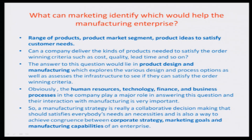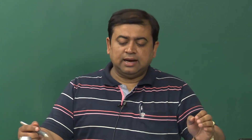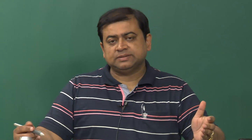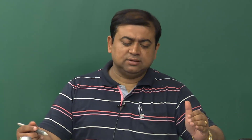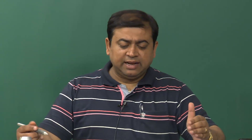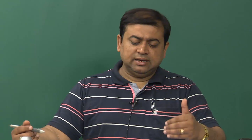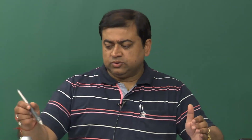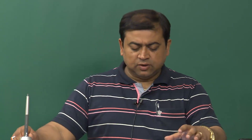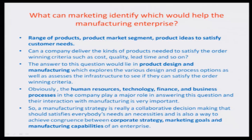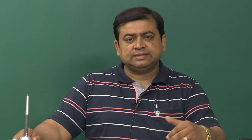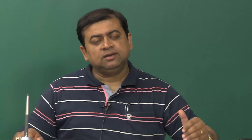The various wings of manufacturing organizations are enabled to do different purposes. For example, the major question that modern day marketing faces is what marketing can identify to help the manufacturing enterprise. These different concepts will be covered at a system level and organizational wings level, with various objectives streamlined for each wing of such an enterprise in the following lecture. Thank you.